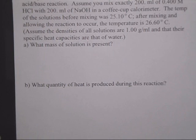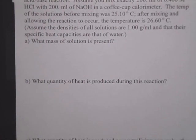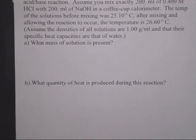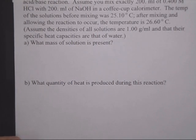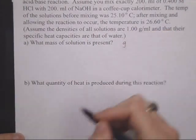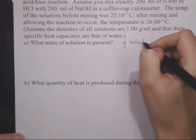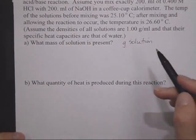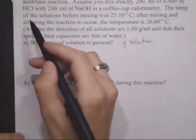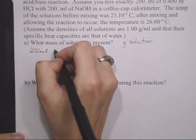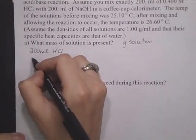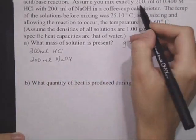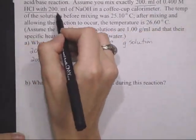Okay. If you're not finished reading, you can pause it and keep going. The first part of the question asks us what mass of solution is actually present. So to get the mass of the solution, we know that we're going to need grams of the solution total. And in this particular case, we have two solutions. We have 200 milliliters of an HCl solution and we also have 200 milliliters of an NaOH solution.